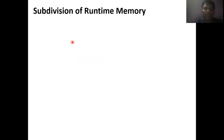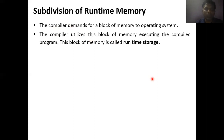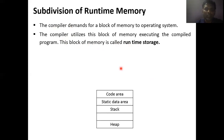We are going to describe how the runtime memory is represented and divided. Runtime memory will be divided into three — actually four parts. The compiler demands a block of memory from the operating system, and that block of memory is utilized by the compiler to execute the particular program. We call it the runtime storage because we want to use that memory for runtime purposes. Runtime memory is subdivided into: one is the code area, second is the static data area, third is the stack, and fourth is the heap.